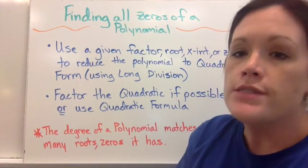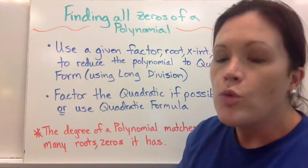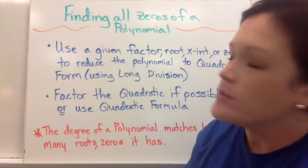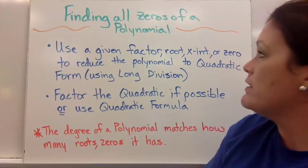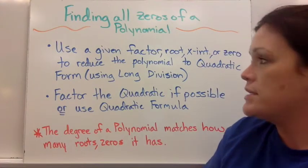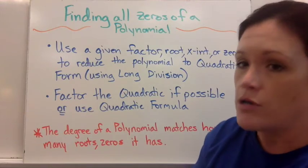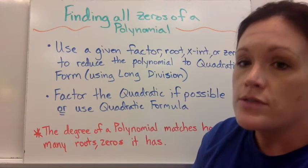If we're asked to find all the zeros of a polynomial, we need to take our polynomial and try to reduce it down to quadratic form. So using a given factor, a root, an x-intercept, or a zero, we would want to reduce the polynomial to quadratic form using long division to do that.